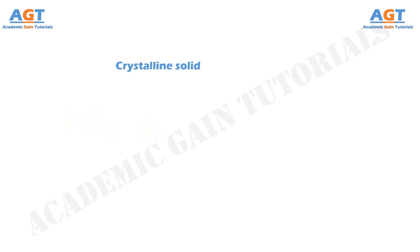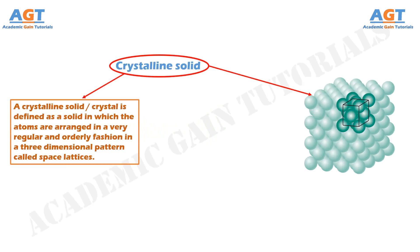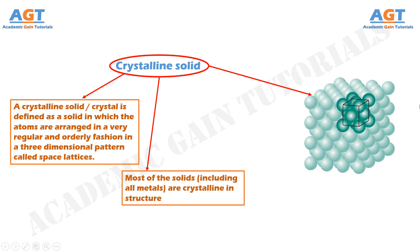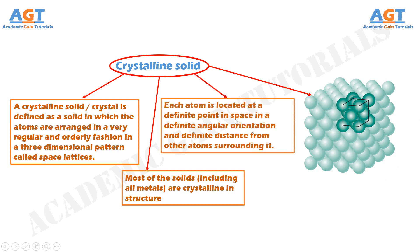A crystalline solid, or a crystal, is defined as a solid in which the atoms are arranged in a very regular and orderly fashion in a three-dimensional pattern called space lattices. Most of the solids, including all metals, are crystalline in structure and are made up of an aggregate of single crystals. In a crystalline solid, each atom is located at a definite point in space, at a definite distance from and in a definite angular orientation to other atoms surrounding it.